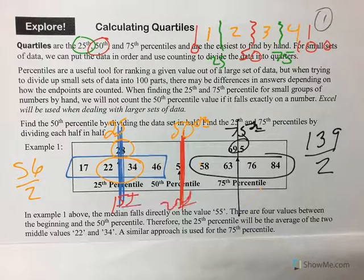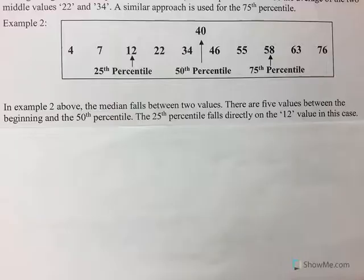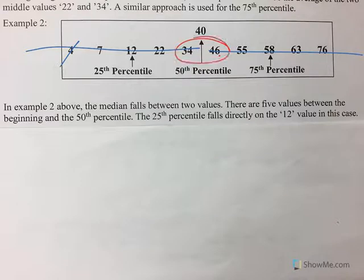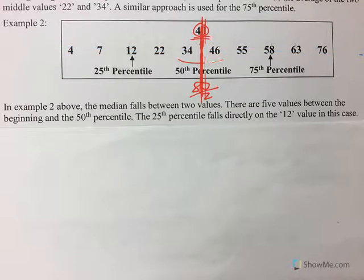Same idea. Now this one has an even number, so when I go to find - here's the first five, here's the first five - so to find my 50th or my median I have to take the average of these two. So 80 divided by 2 gives me the median of 40.